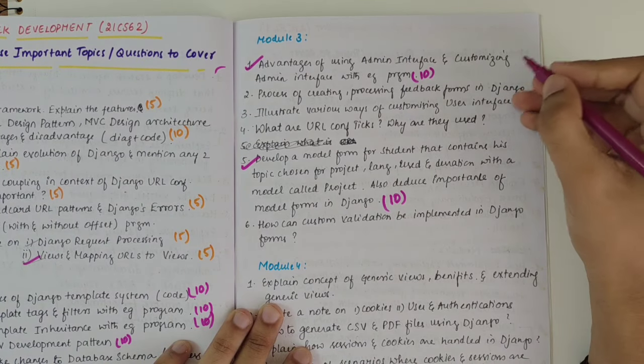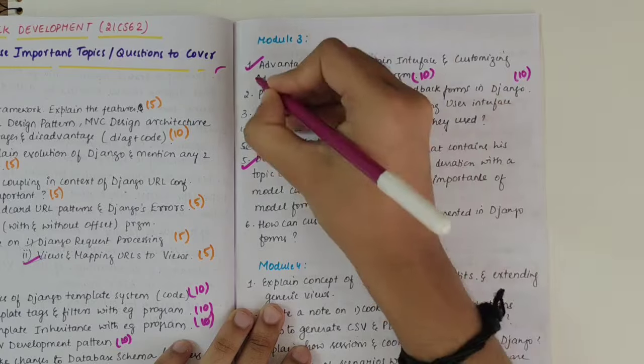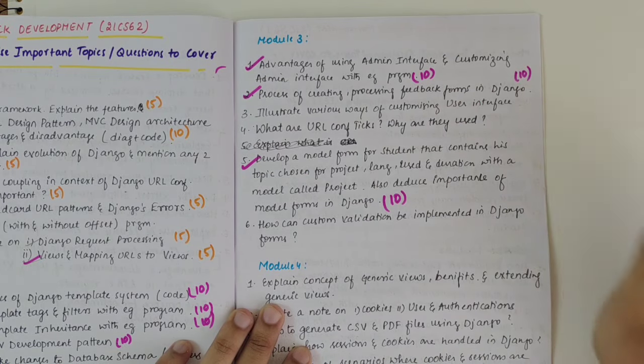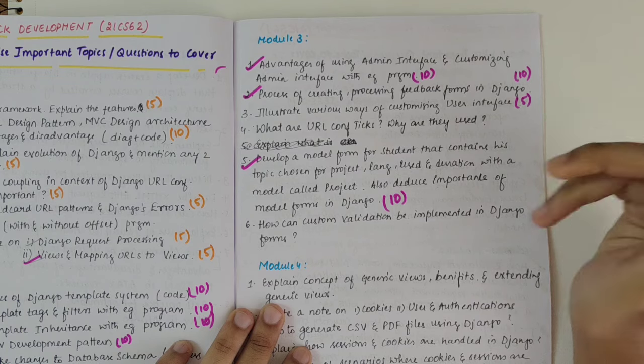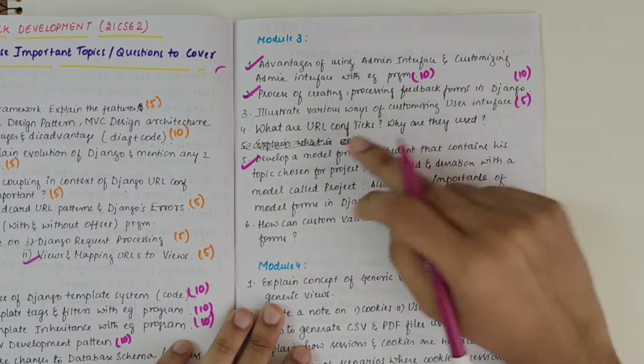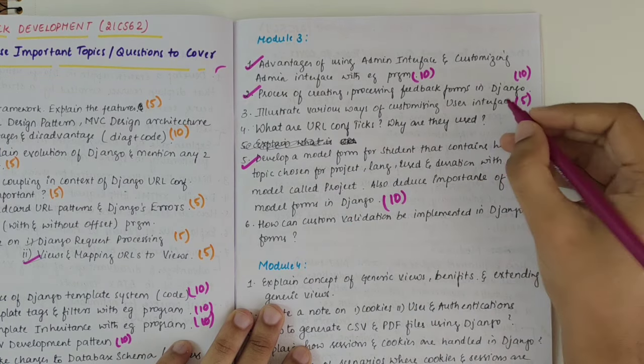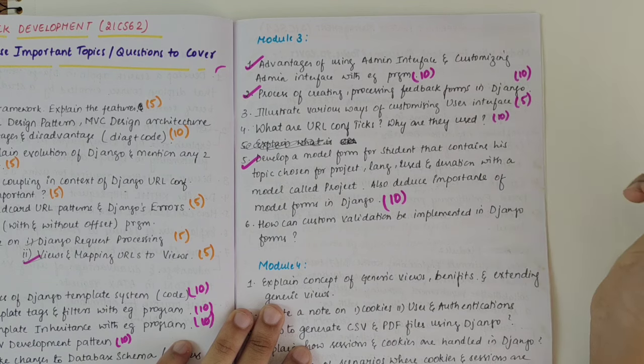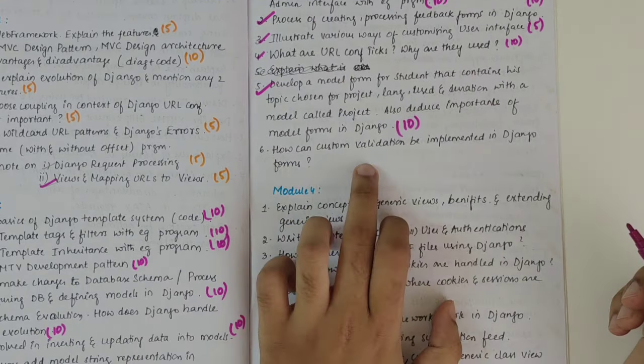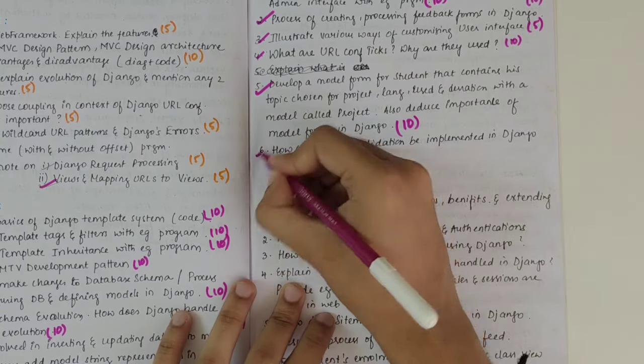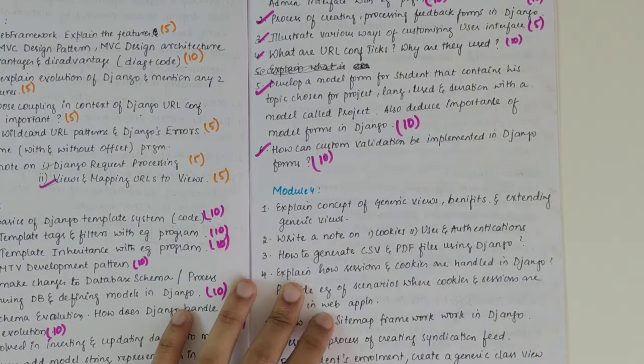Next, we have process of creating and processing the feedback forms, 10 marks, a must question. Then we have ways of customizing the user interface. This could be five or eight marks. Again, you should write a program there. What are URL configuration tricks? Why are they used? 10 marks. Then we have how can custom validation be implemented in Django? This is again a 10 marks Django forms.